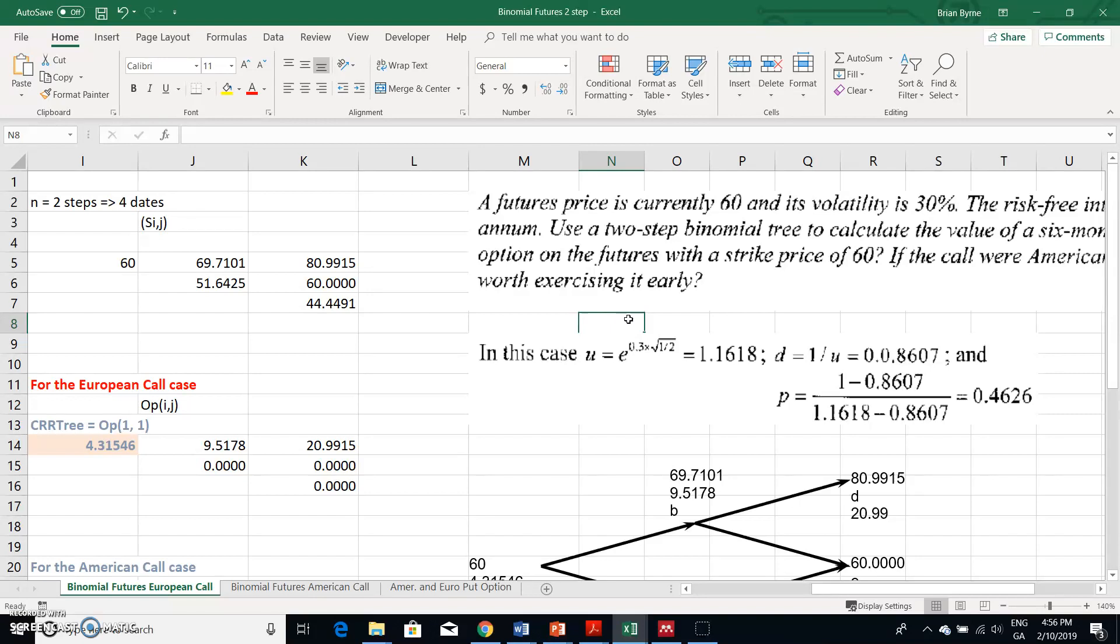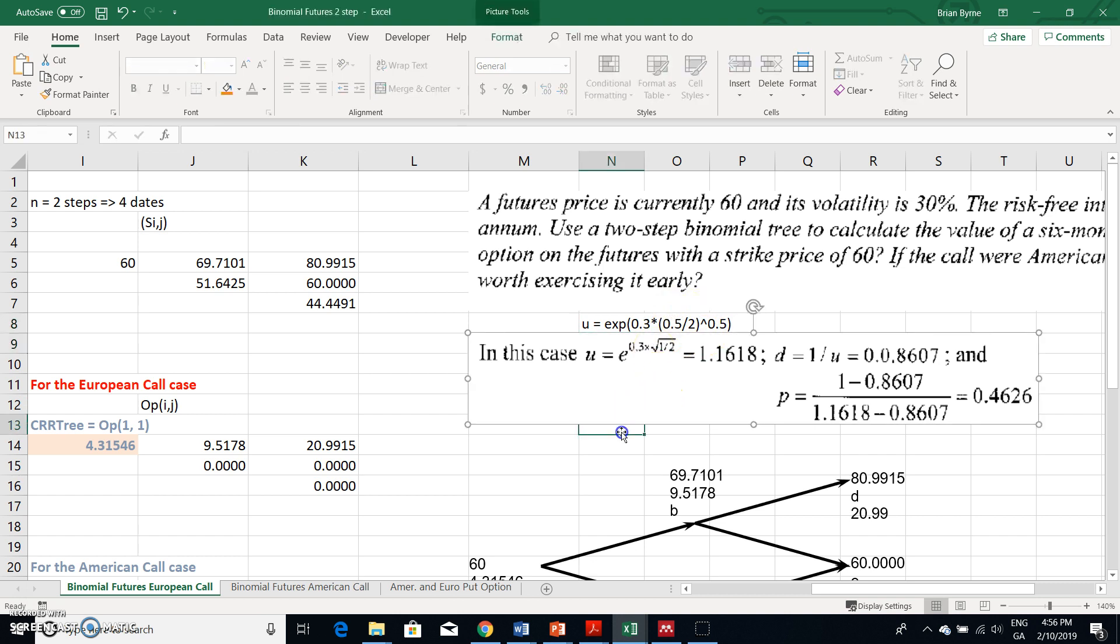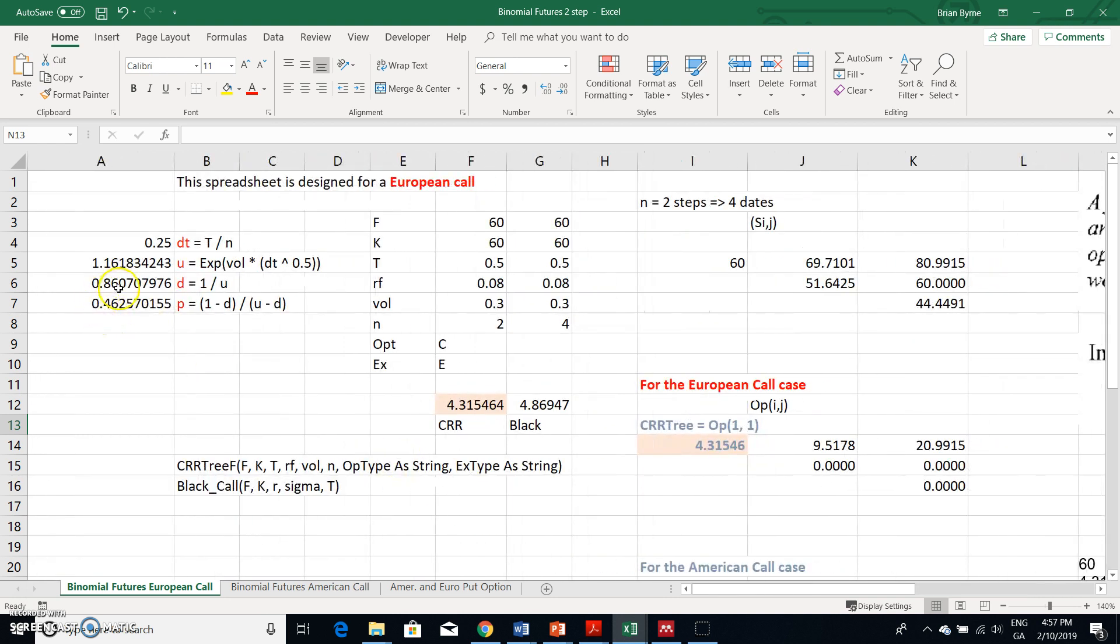So really what we have is u equals exp of the volatility 0.3 multiplied by 0.5 divided by 2, to the power of 0.5. That's the u here, equal to e to the power of 0.3 multiplied by 0.5 divided by 2, and we take the square root of that. Then we proceed: d equals 1 over u, which is typical, and that yields 0.86.